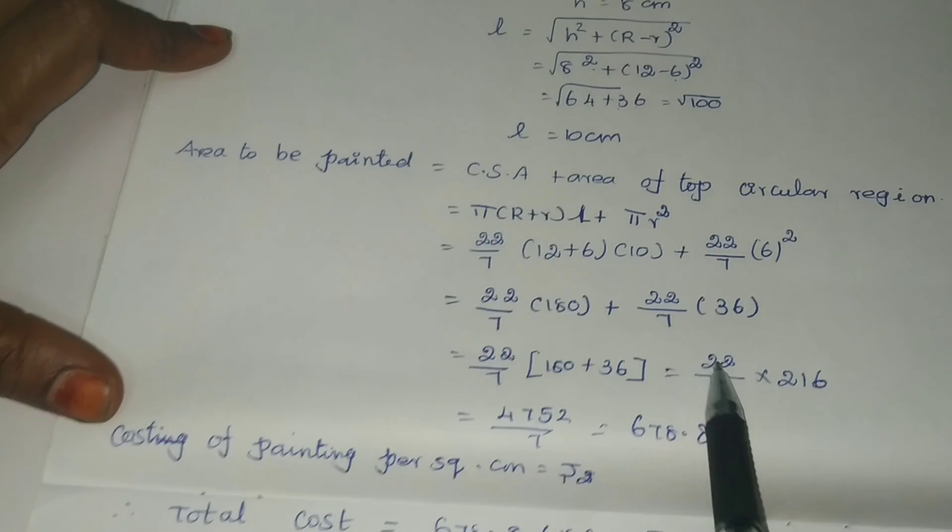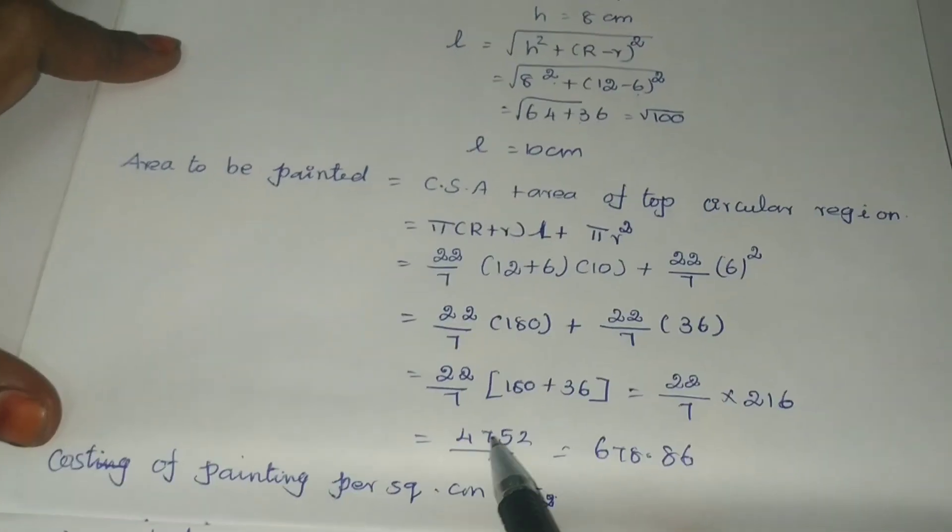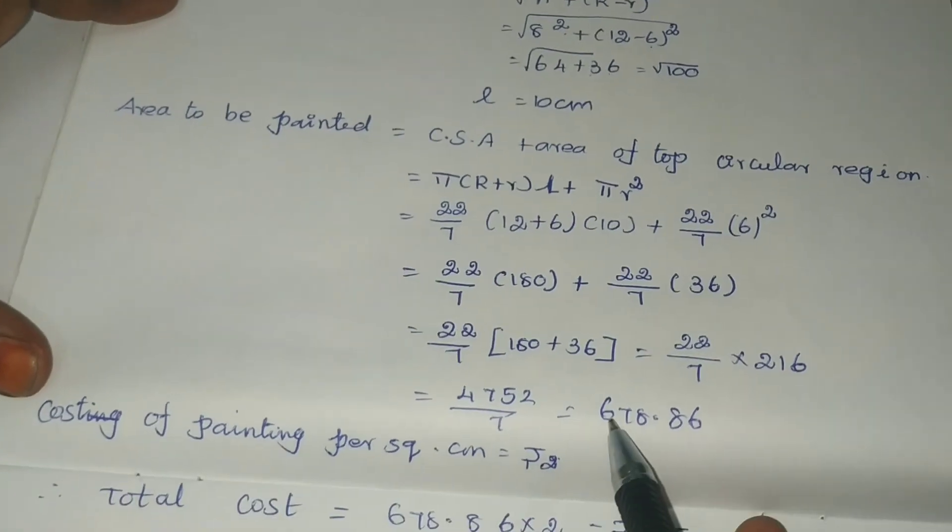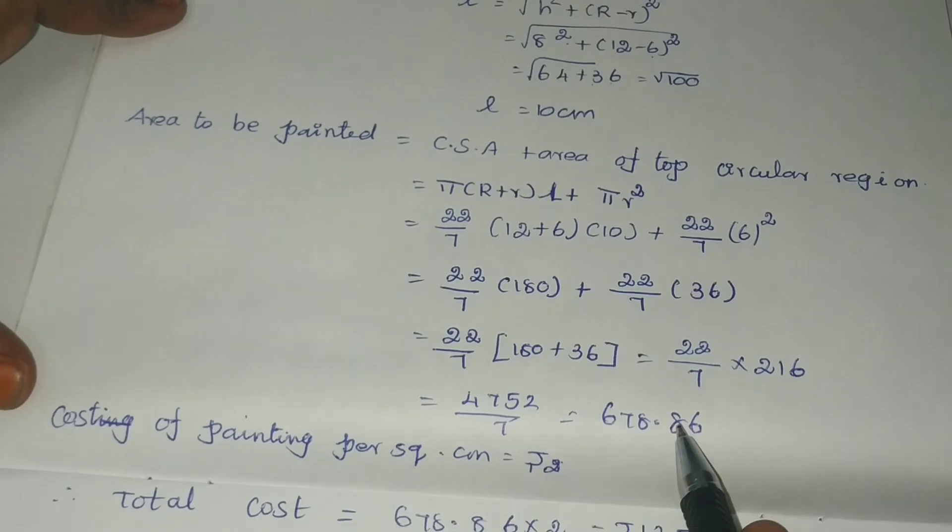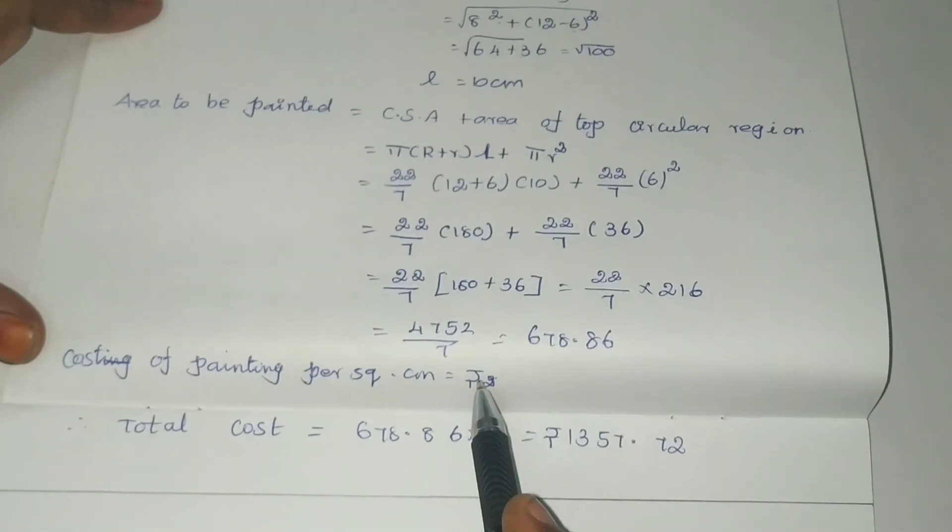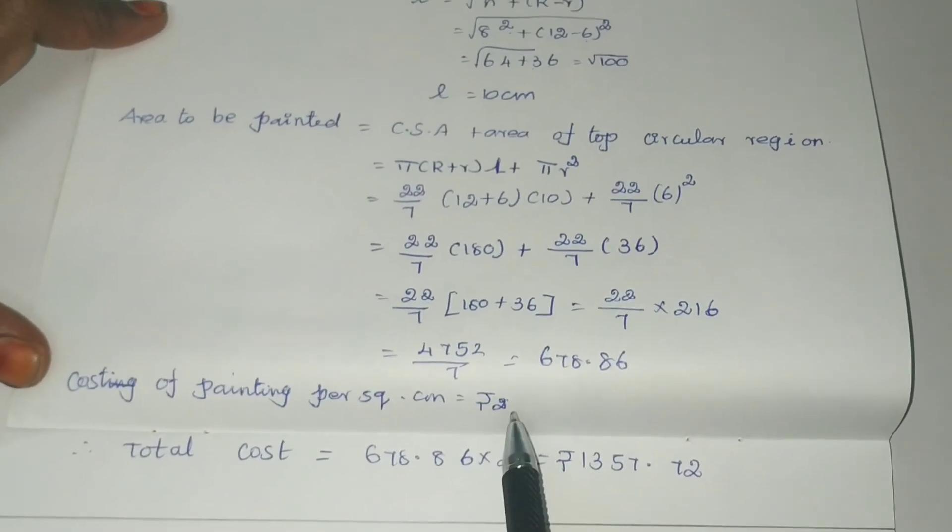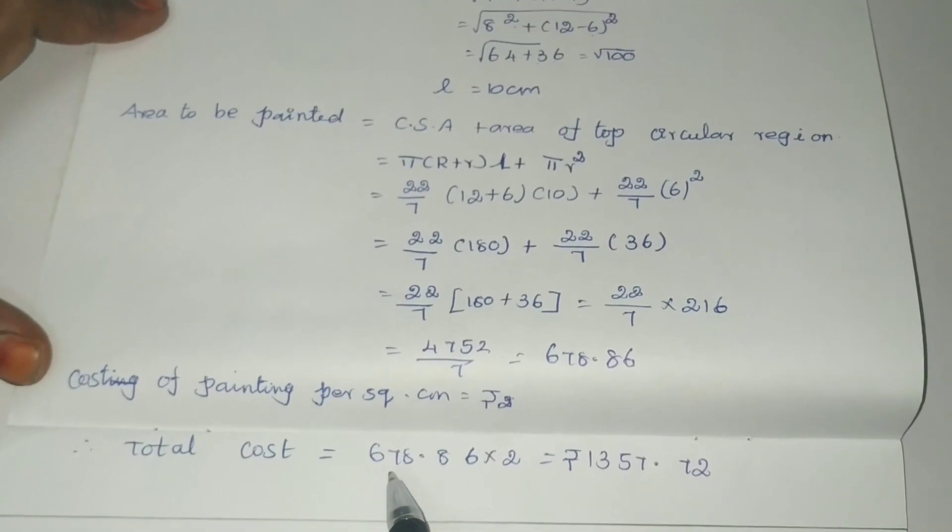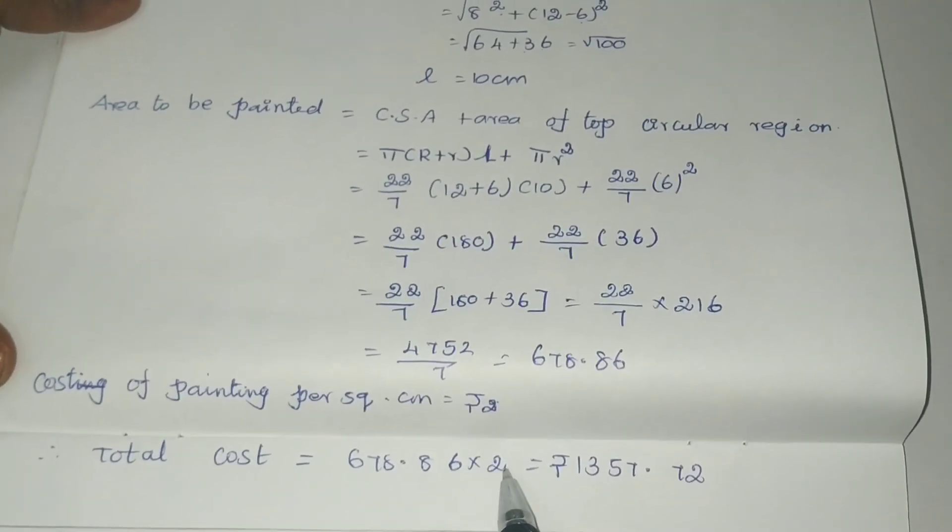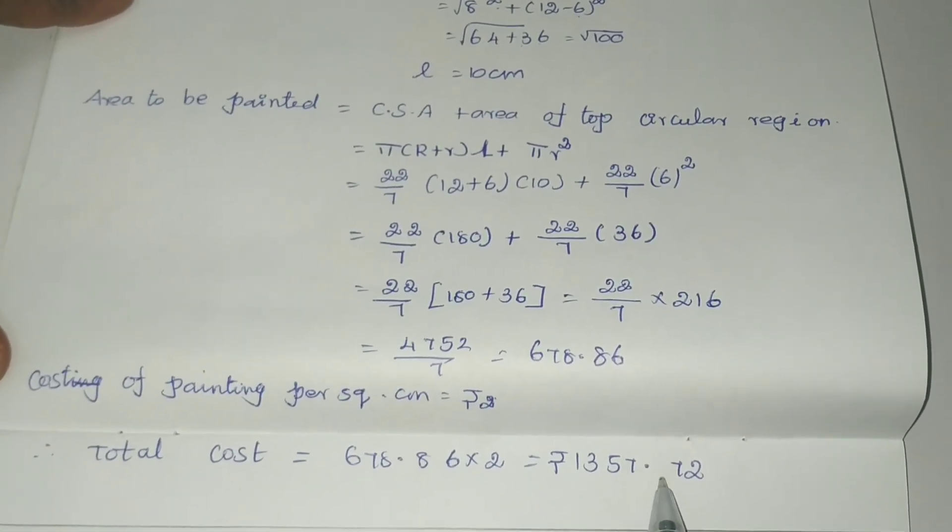This equals (22/7)(216). The numerator product is 4752 divided by 7, which equals 678.86. The cost of painting per square centimeter is 2. Therefore, total cost equals 678.86 × 2 = Rs. 1357.72.